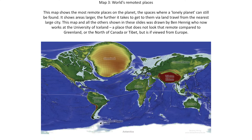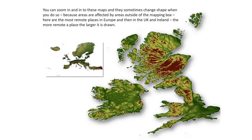If you're sick of people, this is the map of where you have to go to get furthest away from people. This is drawn by Ben Hennig and he did it in a very calculated way — it actually takes into account going around hills and things. Greenland's the answer. In the UK, that's where you need to go to get away from people.